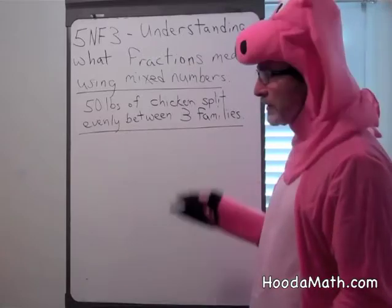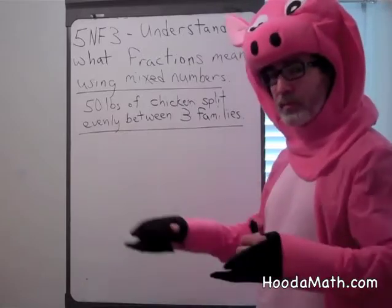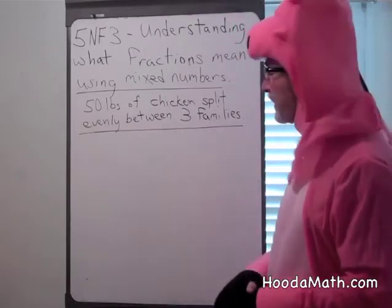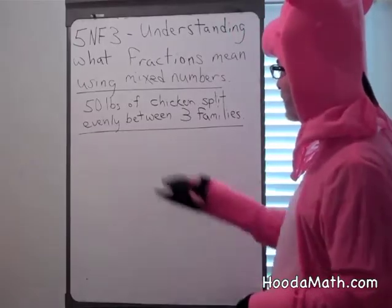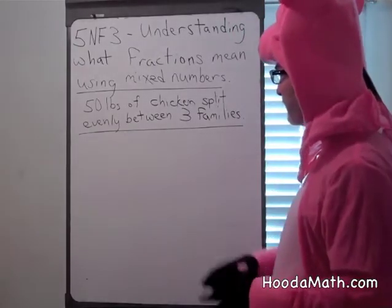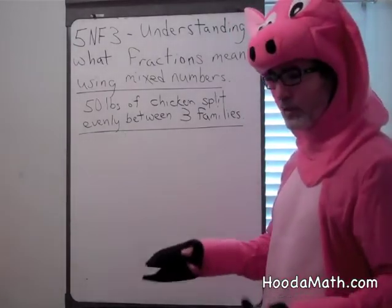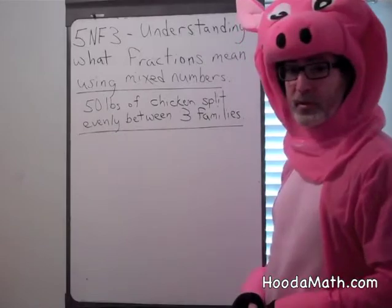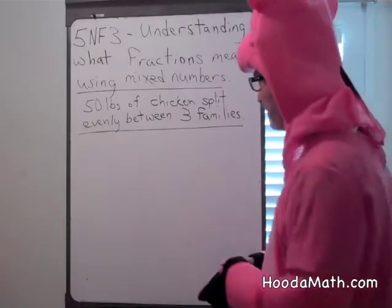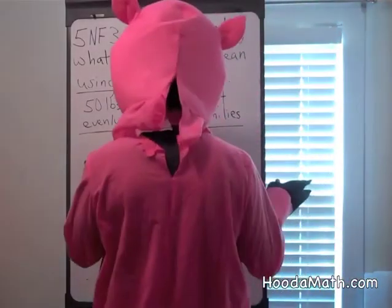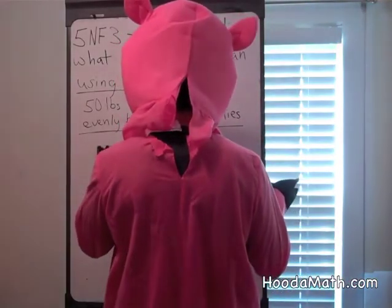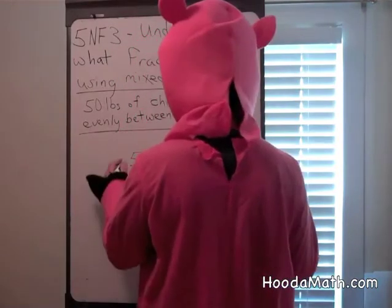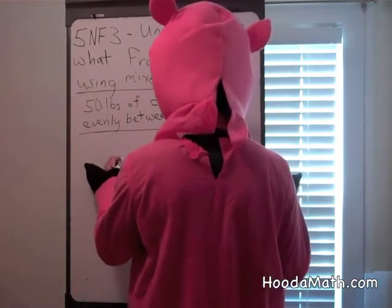But if families do it together, they can buy even larger amounts of, say, chicken, and they're going to split it. When you split something into even amounts, you're dividing it. So fifty pounds divided by three families.